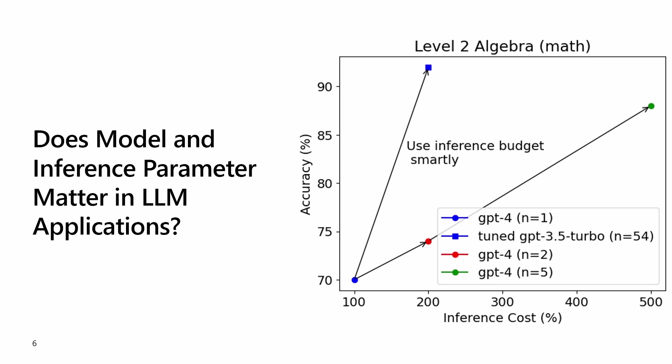For easy problems, the tuned GPT-3.5 turbo model vastly outperformed untuned GPT-4 in accuracy. For example, 90% versus 70% and cost-efficiency.